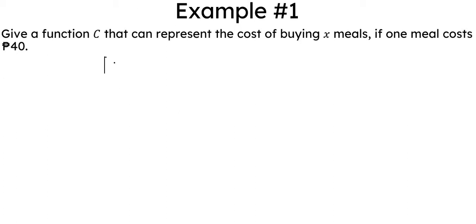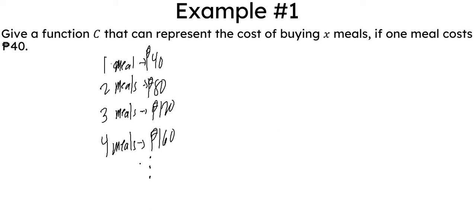If one meal costs 40 pesos, then we know that two meals by simple addition will have 80 pesos. Three meals will have 120 pesos because we just keep on adding. One meal is 40, so two meals, we just keep on adding. Four meals would be 160 pesos and so on.